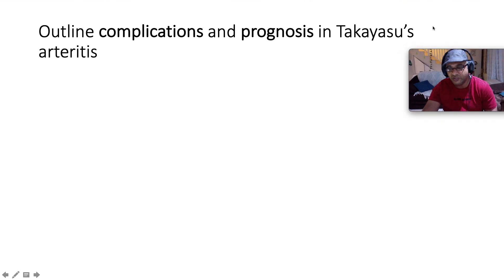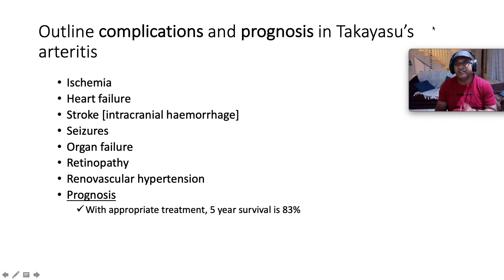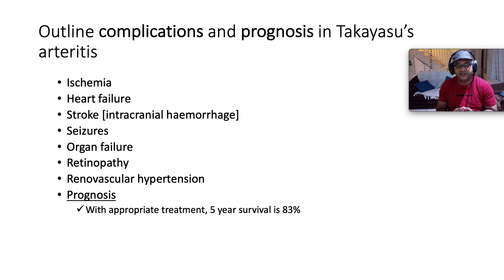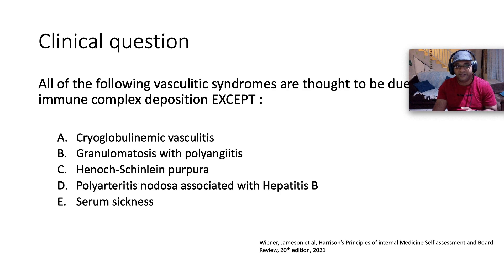Complications of Takayasu arthritis: as a vasculitis, the sequelae may be ischemia and obstruction, or rupture leading to hemorrhage. Complications include ischemic heart disease, heart failure, stroke and intracranial hemorrhage, seizures, organ failure, retinopathy, and renovascular hypertension. With appropriate treatment, the five-year survival is approximately 83%.